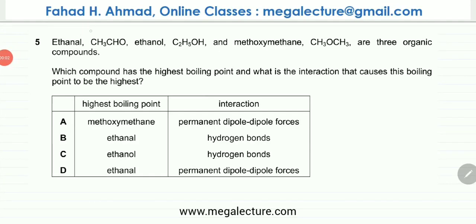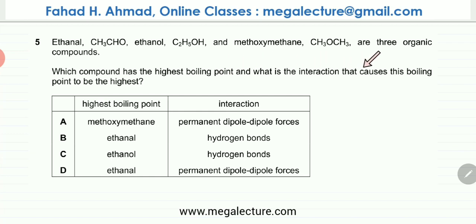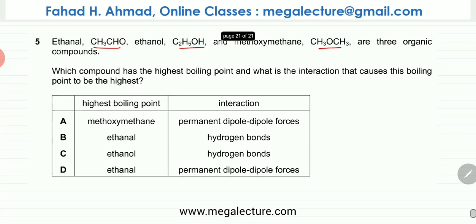The following question states that ethanal (CH3CHO), ethanol, and methoxymethane are three organic compounds. Which compound has the highest boiling point and what is the interaction that causes this boiling point to be the highest? So let's first draw each one of these molecules and figure out what type of intermolecular forces exist between these molecules.